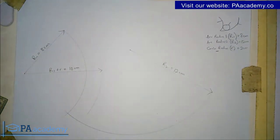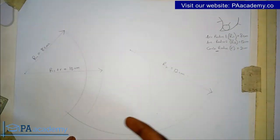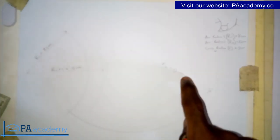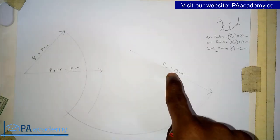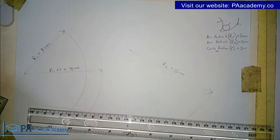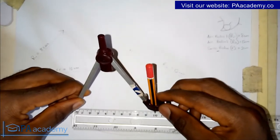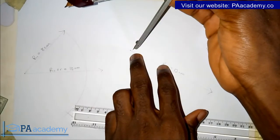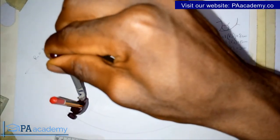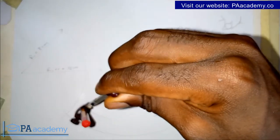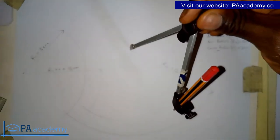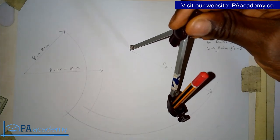We are going to do the same thing for the second arc, but this time the auxiliary arc goes on top of it. For this one, we use R2 minus r: 12 cm minus 2 cm, which is also 10 cm. I place the compass at that point and draw the arc. We don't need a full arc — just enough for it to intercept with the first auxiliary arc.